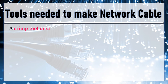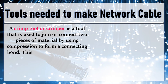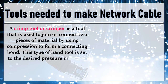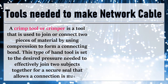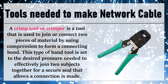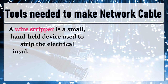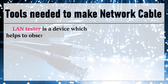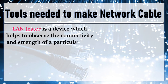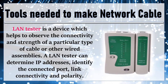Another tool is the crimp tool or crimper, a tool used to join or connect two pieces of material by using compression to form a connecting bond. This handheld tool is set to the desired pressure needed to effectively join two subjects together for a secure seal and connection. You can also use a wire stripper, a small handheld device used to strip the electrical insulation from electric wires. Lastly, the LAN tester is a device which helps to observe the connectivity and strength of a particular type of cable or other wired assemblies. A LAN tester can determine IP addresses, identify the connected port, link connectivity, and polarity.